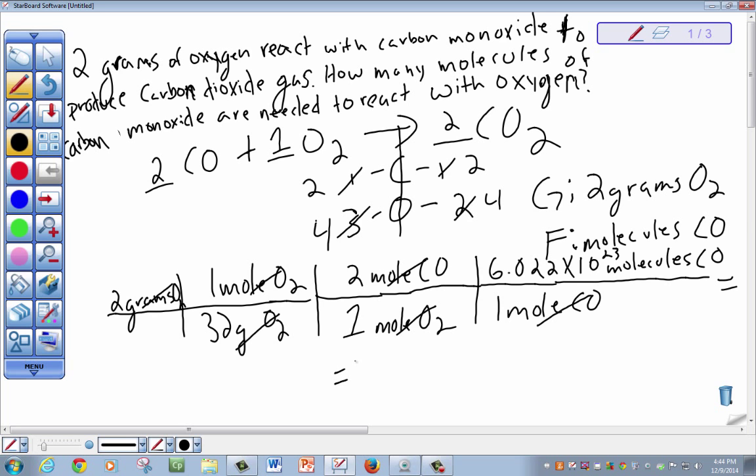We simply just multiply the top and divide it by the bottom to give us our answer of 6.691 times 10 to the 22nd power molecules of carbon monoxide are needed to react with oxygen to produce carbon dioxide gas.